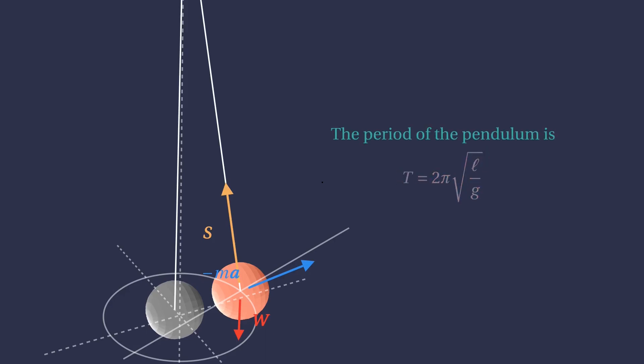This is precisely the solution we would find had we solved the differential equation. It tells us that for small oscillations, the period of the pendulum is independent of the angle.